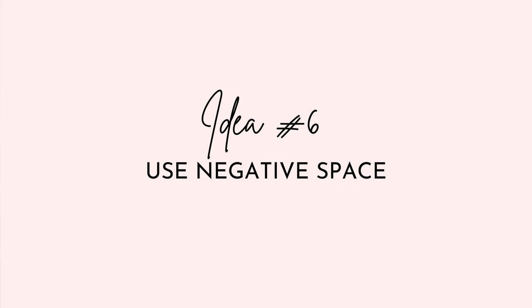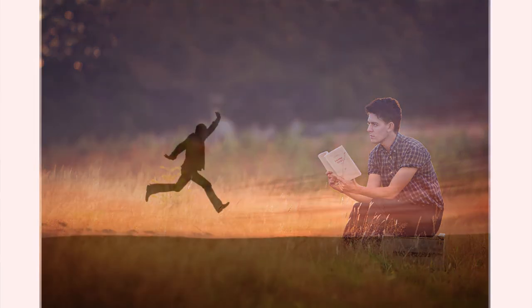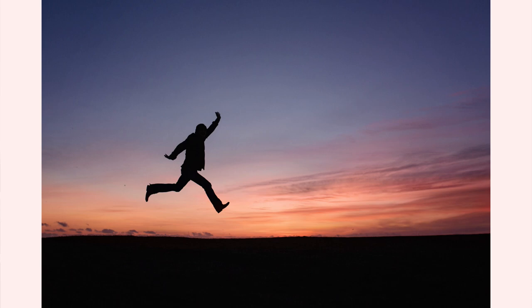Idea number six is to use negative space, and again you don't need to change your camera settings for this one because it is a composition tool. Negative space is when you have an area of white space around your subject — that doesn't mean the space needs to be white, it simply means there's nothing competing for attention in the photo. If you use the rule of thirds, you can have your subject to one side and have some negative space on the other side. I've used white walls, garage doors, brickwork, backdrops with just trees or greenery — anything where there's nothing contrasting and pulling the eye away from your subject can be considered negative space.